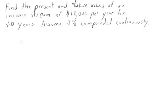Now let's talk about how we're going to compute this. Your formula for present value is the integral from 0 to m, m is how long you're going for, of your income stream s(t) e to the negative rt dt. So let's do the conversion here.